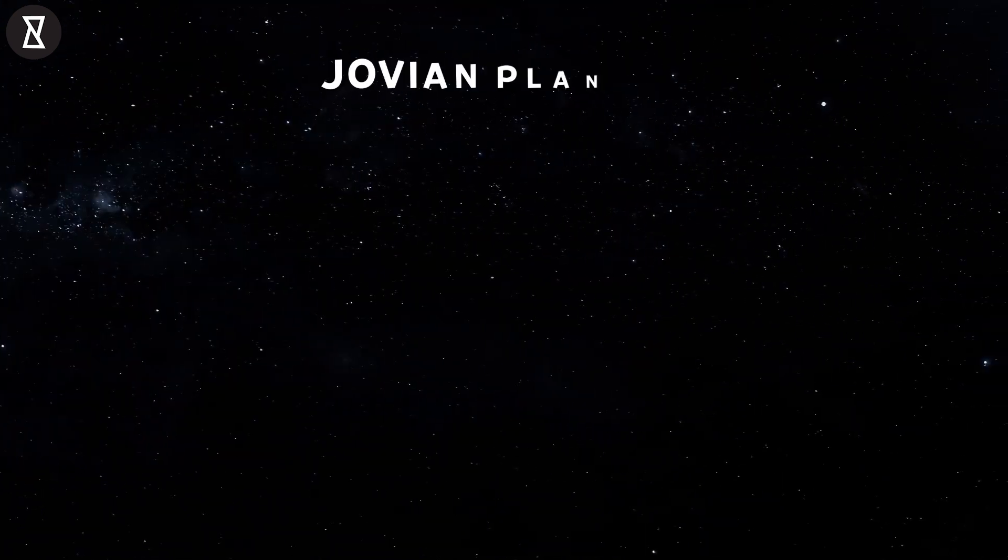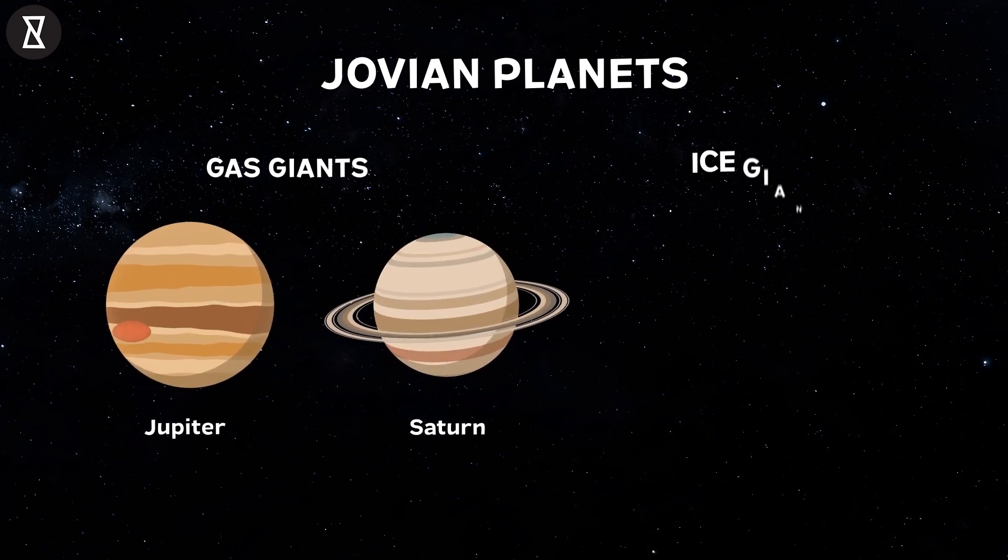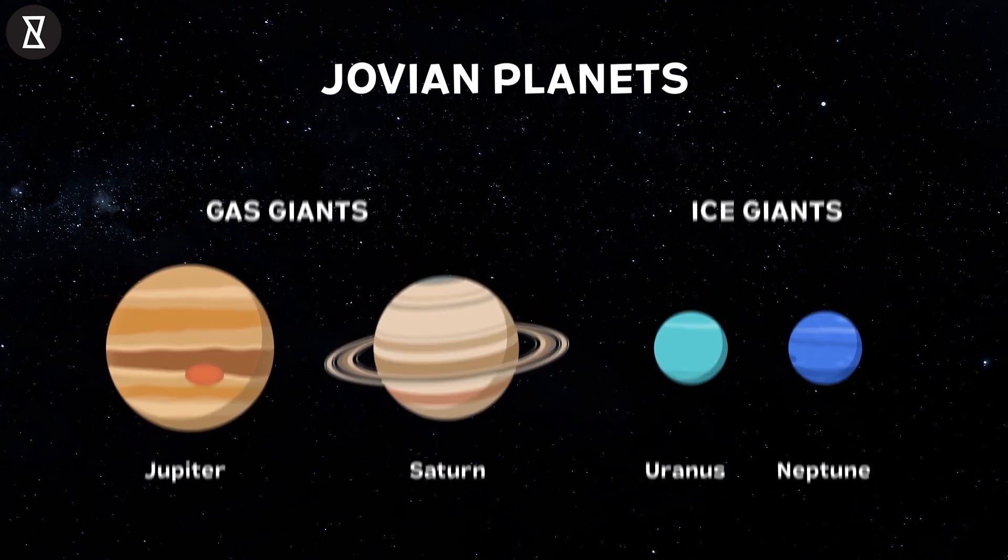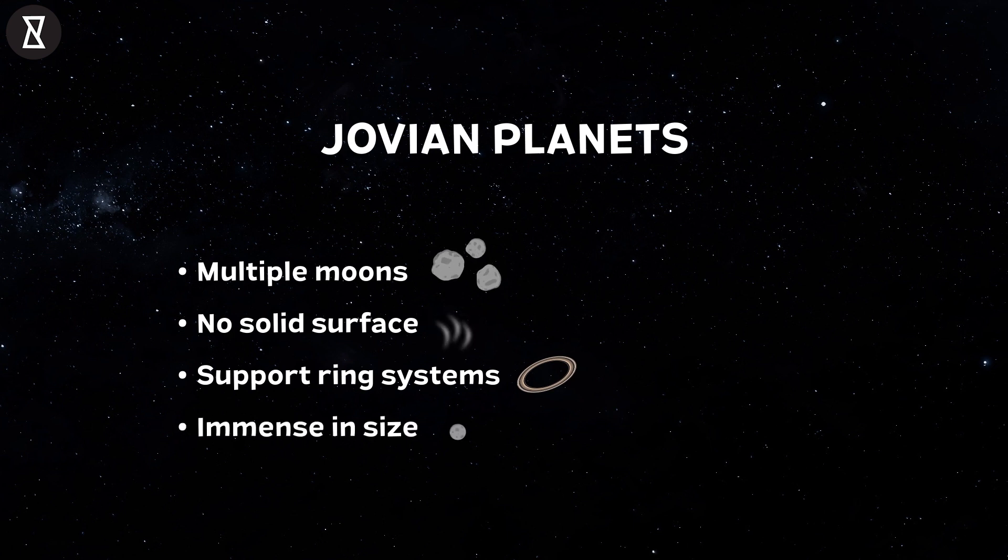Over to the Jovian planets that include gas giants, Jupiter and Saturn, and ice giants, Uranus and Neptune. All these planets have multiple moons, no solid surface, they support ring systems, and are immense in size.